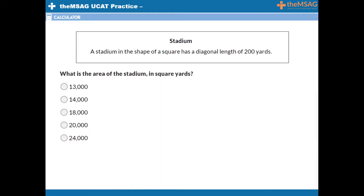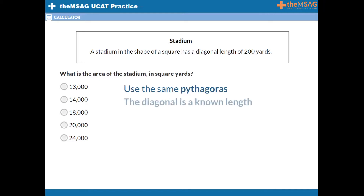This question is asking us to do the reverse of the previous one. We can use the same Pythagoras formula, knowing that a and b will again be the same as we have a square. This time, the diagonal is a known length. Let's use the term x for the side length of the square stadium. We know that x squared plus x squared equals 200 squared. x squared plus x squared is the same as 2x squared.